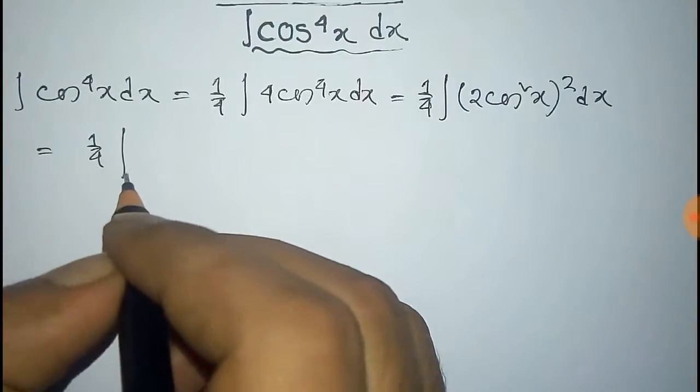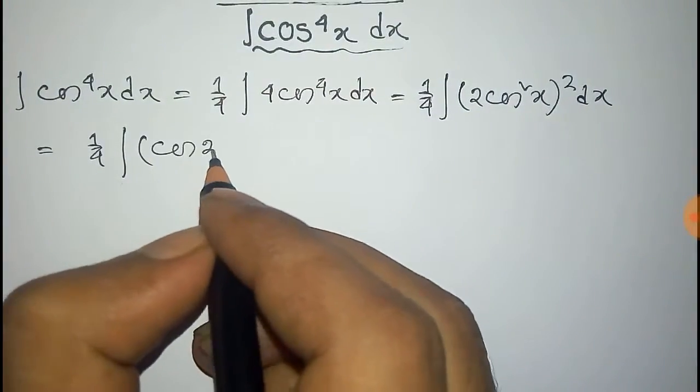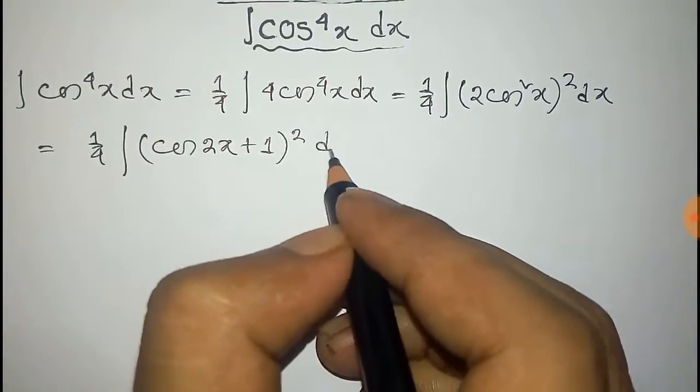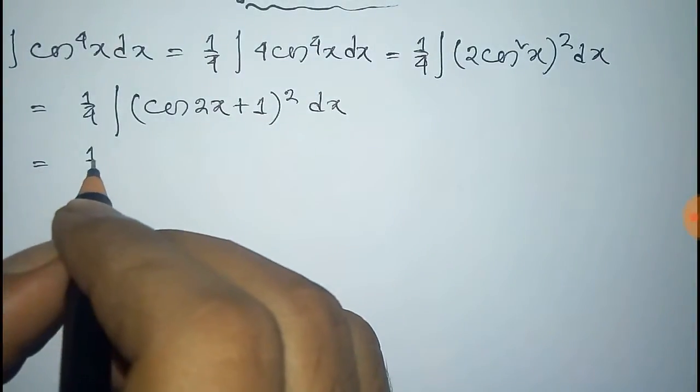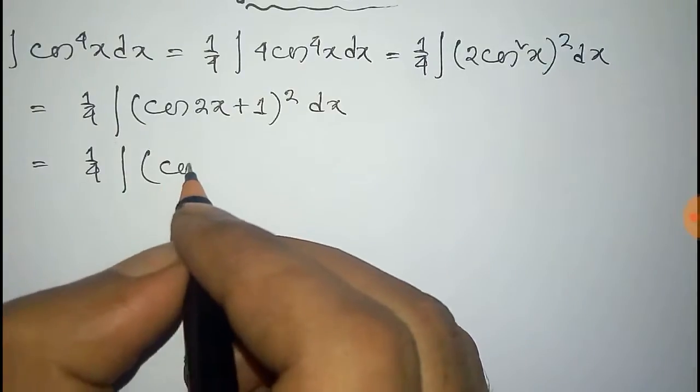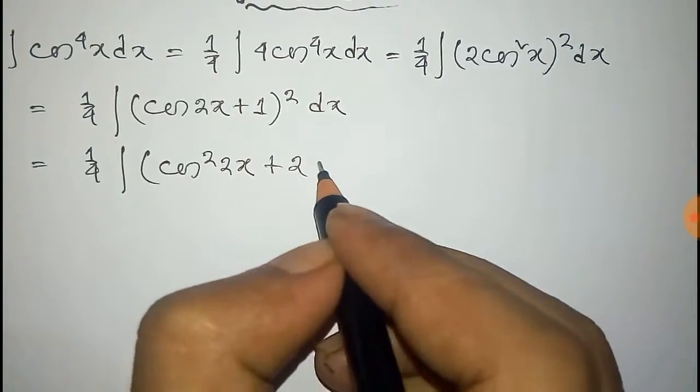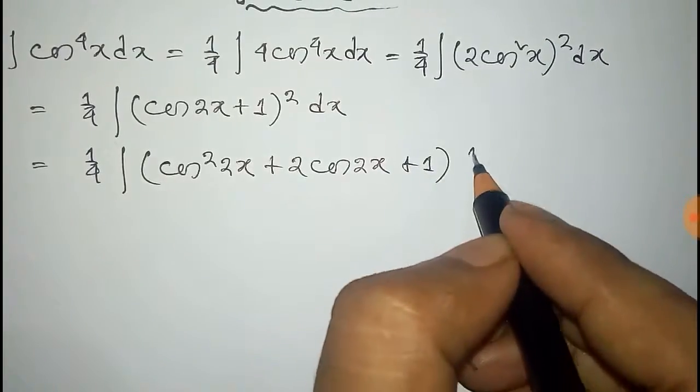This is equal to one fourth. We can write 2 cos square x as cos 2x plus 1 whole square dx.